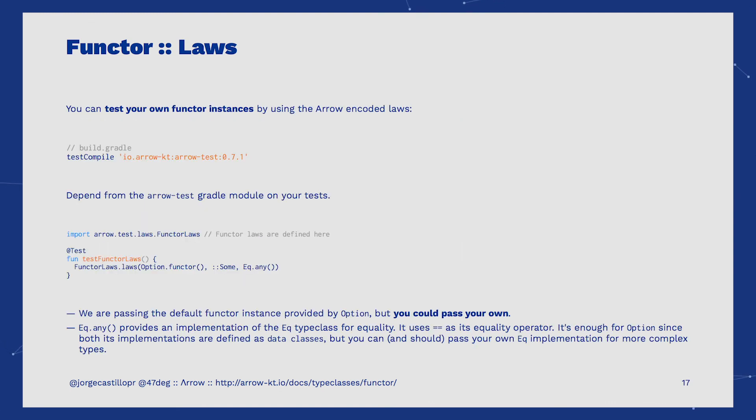If you are creating your own Functor instances for your custom data types, you will also need a way to ensure those instances are satisfying the Functor laws. You can do it by fetching the Arrow test artifact. Once you do this, you can call the law functions over the Functor laws object and pass in your Functor instance, and the Equality instance that you will need to define to provide a way to compare two instances for equality.